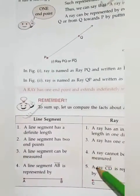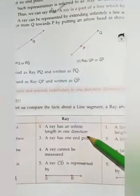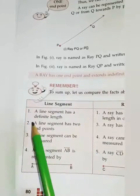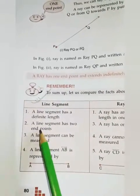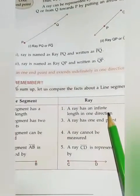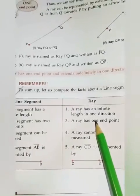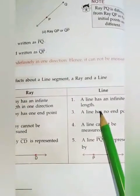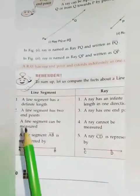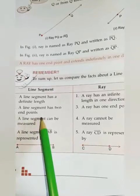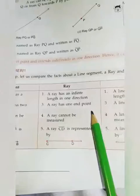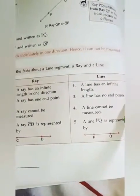Now, we compare this line segment, ray, and line. Line segment, number one: a line segment has a definite length. But a ray has an infinite length in one direction. A line has an infinite length. Then number two: a line segment has two end points. But a ray has one end point. A line has no end points.